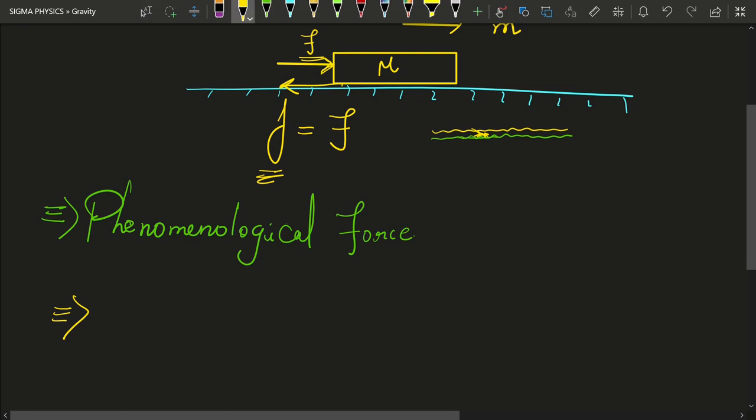So, next we have the static friction. Static friction is nothing but the maximum force that you will have to apply on the book before it begins to move.